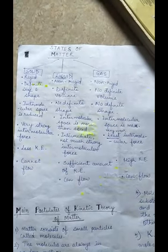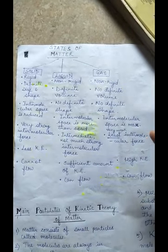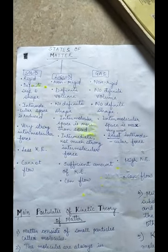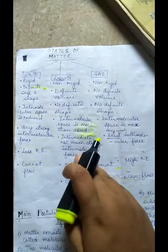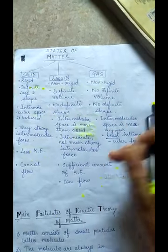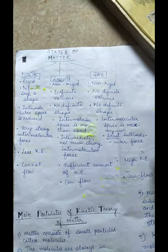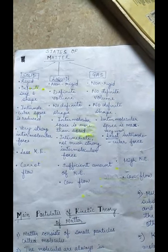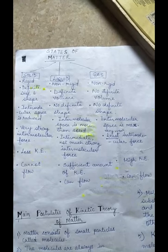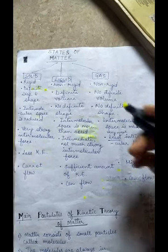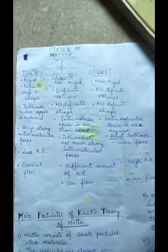Now let's talk about states of matter. Based on the properties of molecules, there are three states of matter: solid, liquid, and gas. In solids, the molecules are tightly packed and the intermolecular space is least, which is why the structure is rigid.